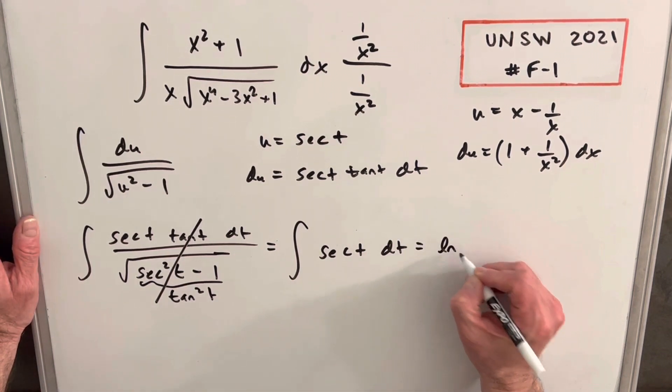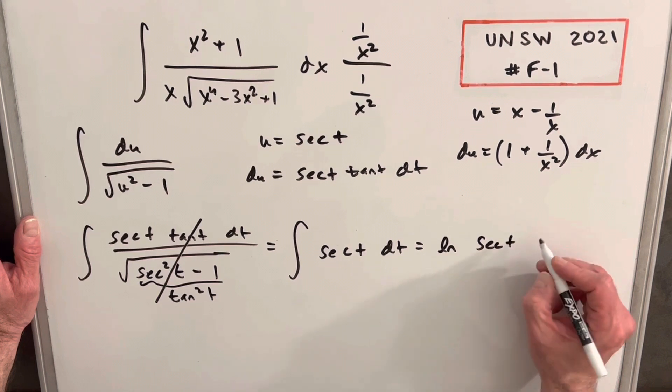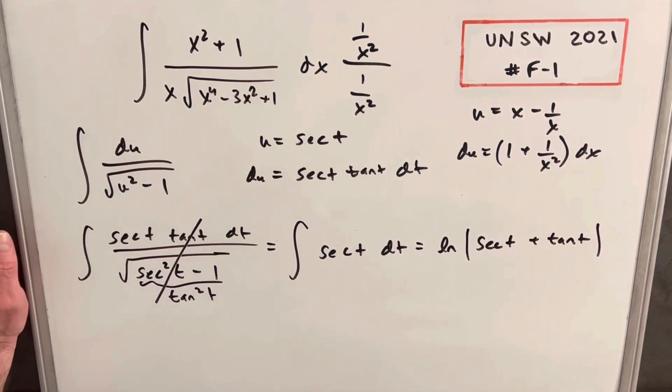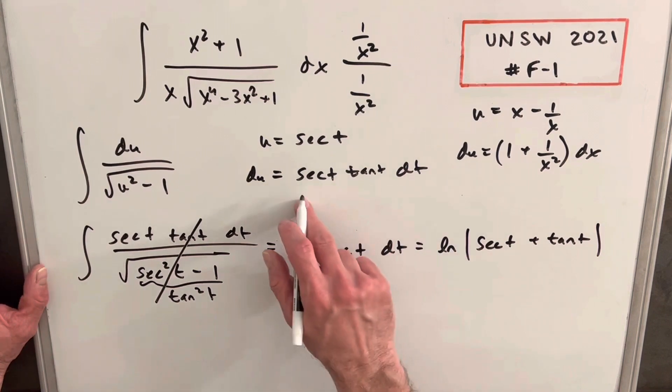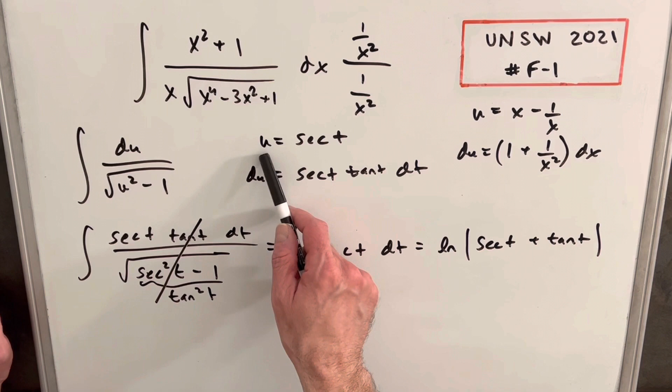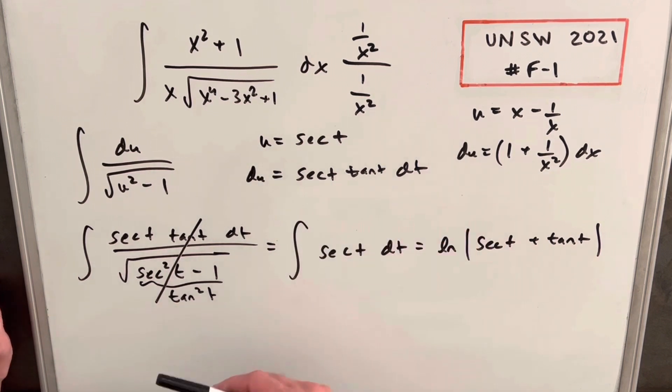This is a pretty common integral, so this is just going to be natural log secant t plus tan t. And then now we just need to roll this back to u and then to x, and then we're done. We know for secant t, secant t is u, and we have our value for u. We just need a value for tan t.